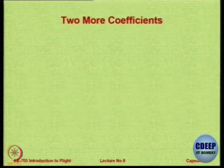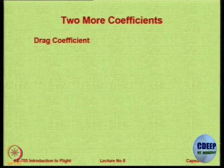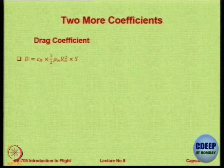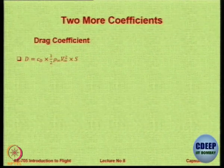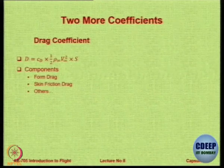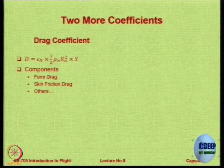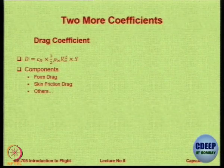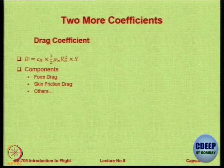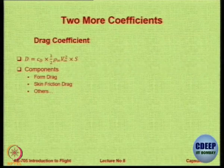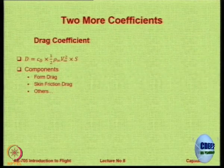There are two more important coefficients. The first is the drag coefficient, Cd, which is very similar to the lift coefficient — only we use Cd instead of Cl. This depends on many things: there is form drag, skin friction drag, and other drag components, which we will discuss in detail in the next chapter on drag estimation. After the next exercise you will be in a position to attempt assignment number 2, which is the mid-semester assignment.